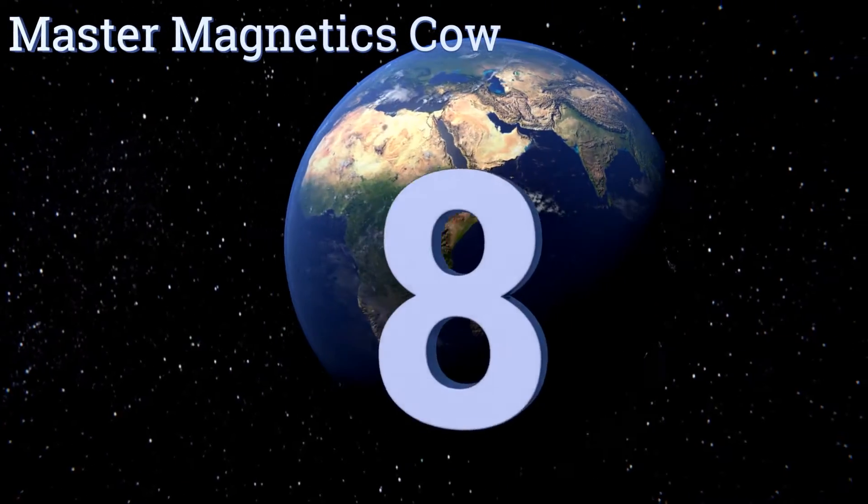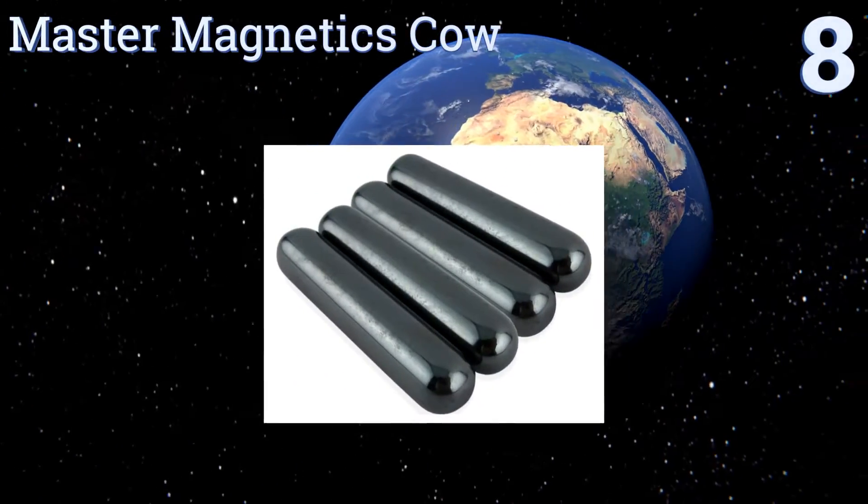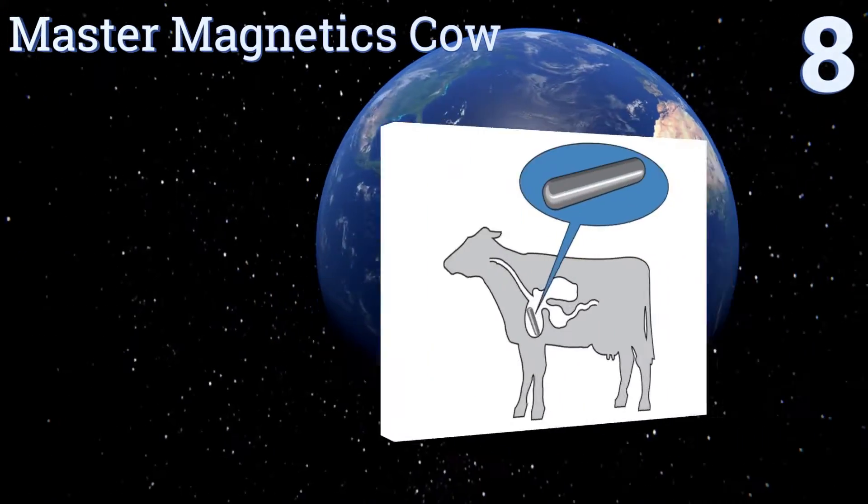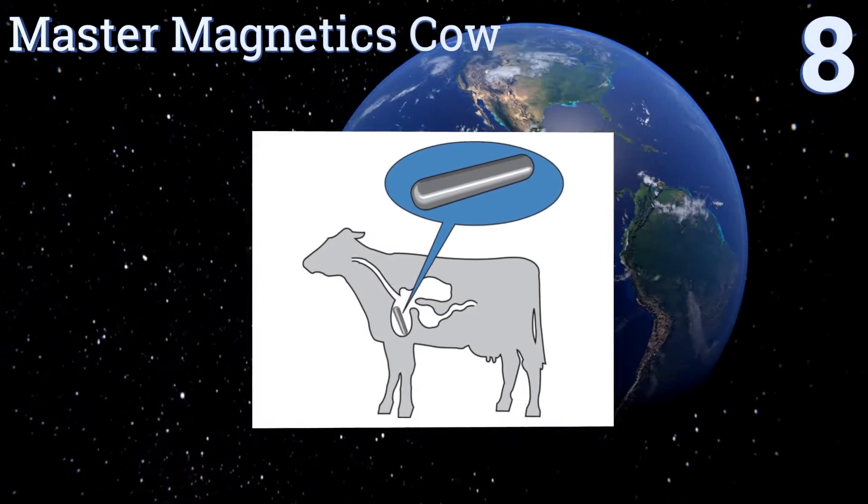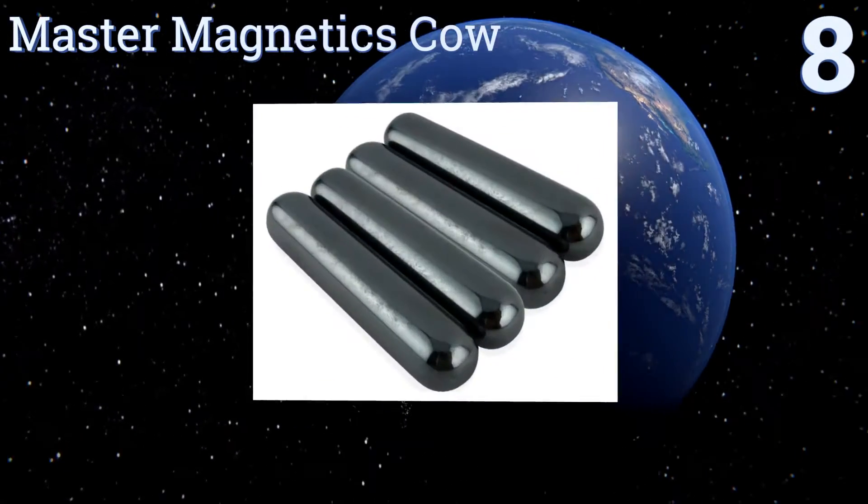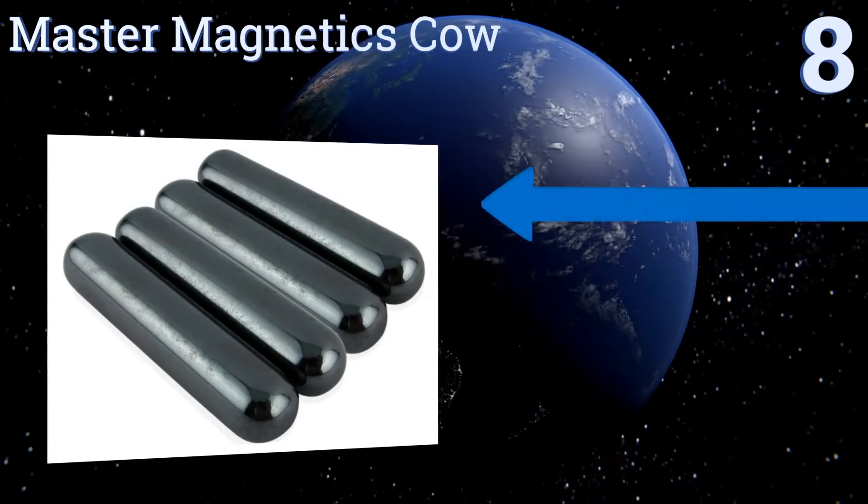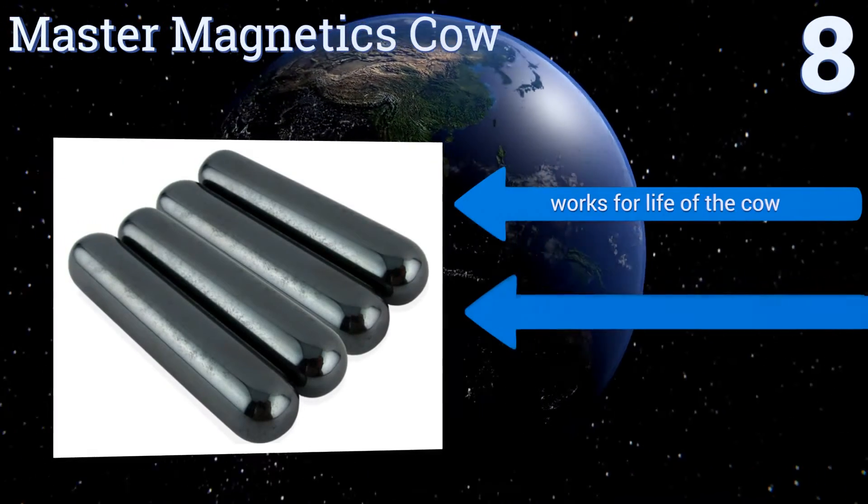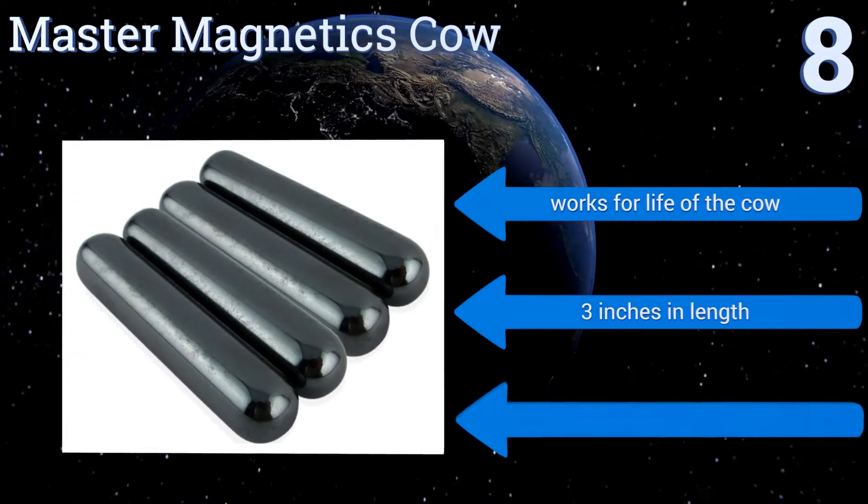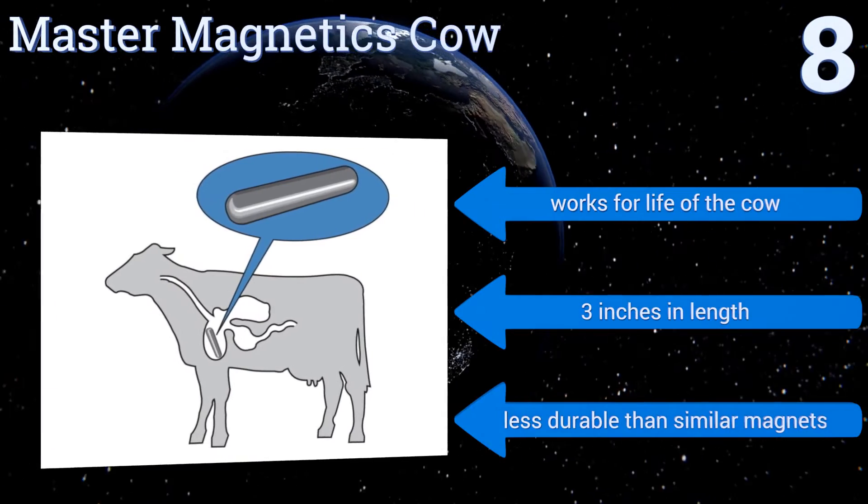Starting off our list at number 8, whether your intended use is to prevent hardware disease in your cattle or you simply require a strong permanent magnet, the Master Magnetics Cow is solid, seamless and powerful. If used on a cow, it's easily administered with an ordinary bowling gun. It works for the life of the cow and is 3 inches long. However, it is less durable than similar magnets.